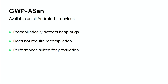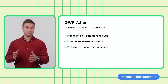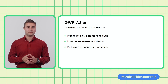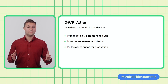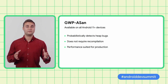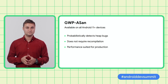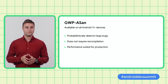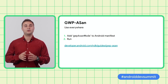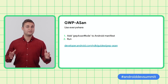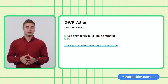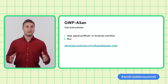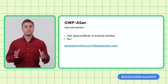In Android 11, we introduced the probabilistic memory detection tool GWP-ASAN. By probabilistic, we mean that we randomly guard certain heap allocations. This strikes a balance between performance and the chance of any single run catching a bug. In some ways, this looks like a lottery system, where we increase our chances of detecting a bug as the number of devices running our code base increases. GWP-ASAN does not require recompilation, and its performance is well suited for production. We strongly recommend using GWP-ASAN everywhere — from the early days of development, all the way to testing and production. It is as simple as adding the GWP-ASAN mode to your Android manifest file. For more information, please check the link on this slide.